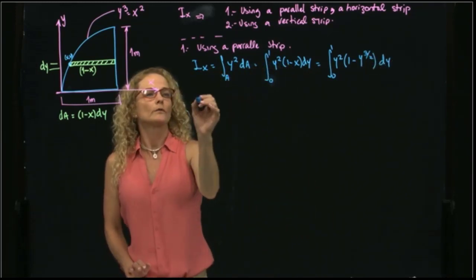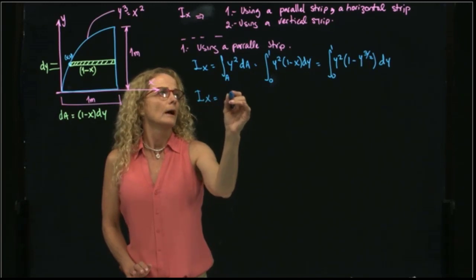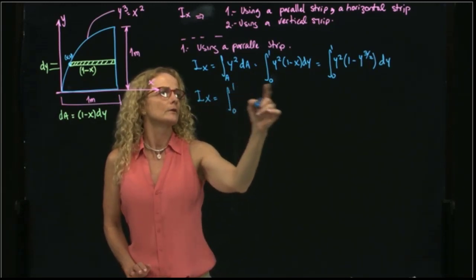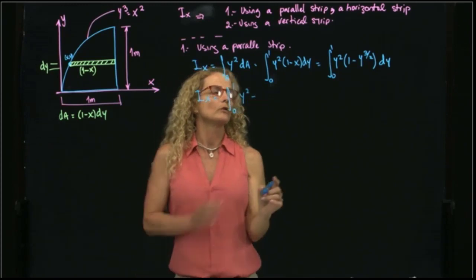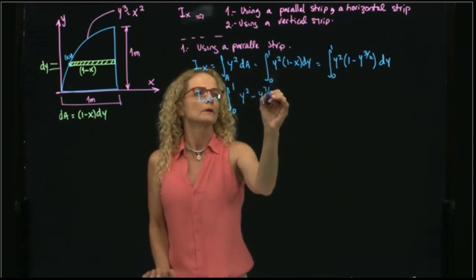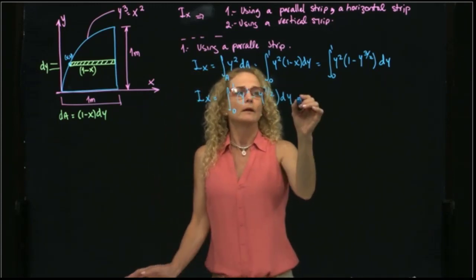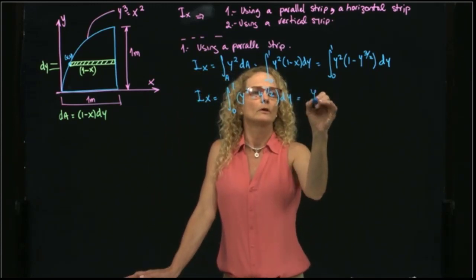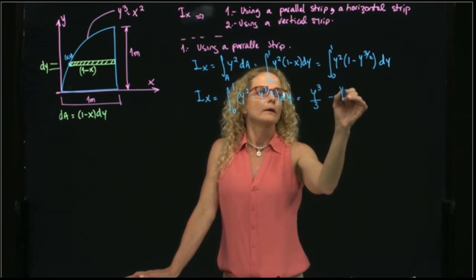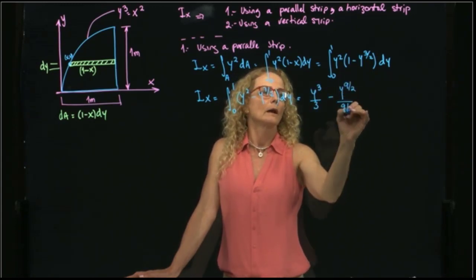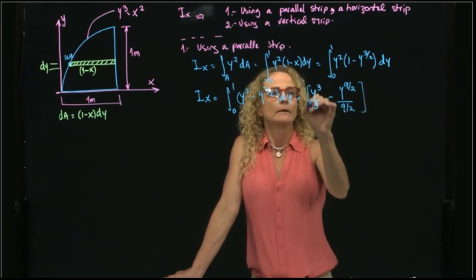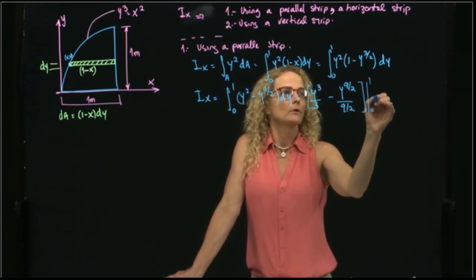I will solve that integral, and I get, let me just multiply that first, y squared minus y to the seven-halves dy. That gives me then, when I integrate those, y cubed over 3 minus y to the nine-halves over nine-halves. And all that evaluated between 0 and 1.